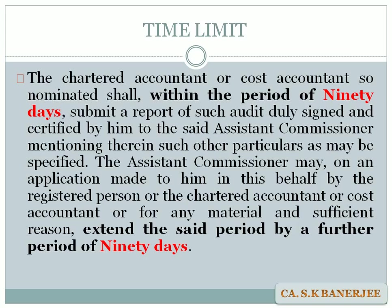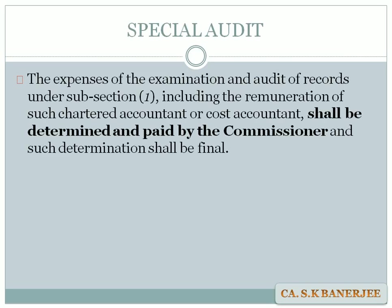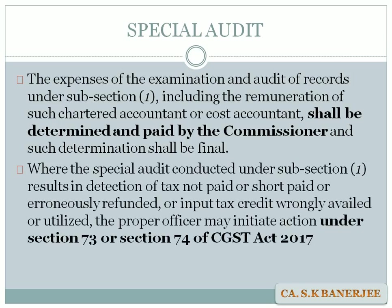Regarding the time limit for special audit: the nominated CA or CMA shall within 90 days submit a report of the audit, duly signed and certified, to the Assistant Commissioner with such particulars as specified. The Assistant Commissioner, on application by the registered person or the CA or CMA, may extend the period by a further 90 days. The total period in no case can exceed 180 days. The expenses for examination and audit of the records will be determined and paid by the Commissioner, and it shall be final.